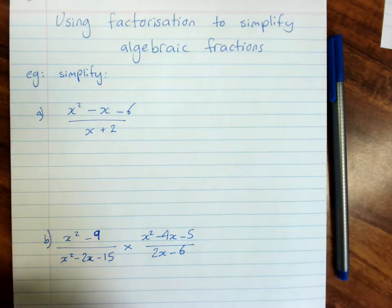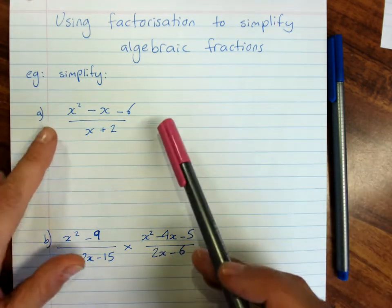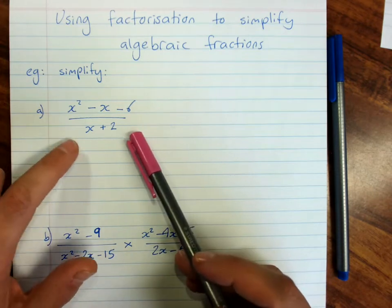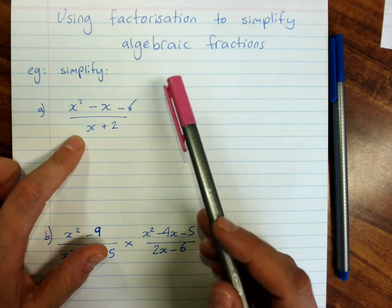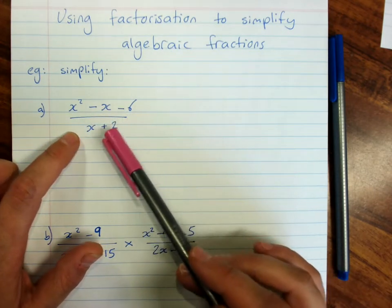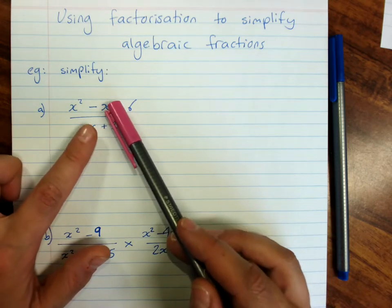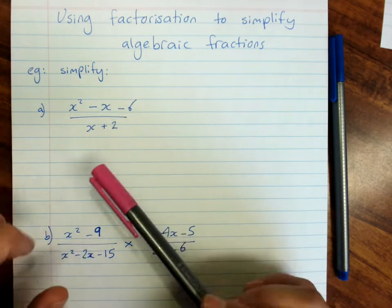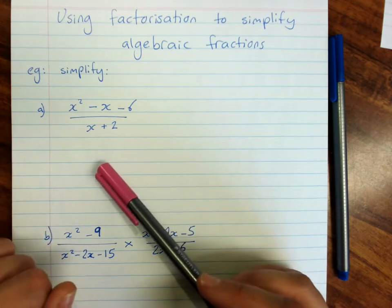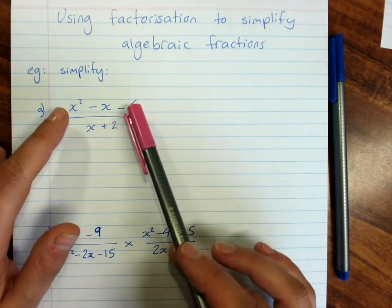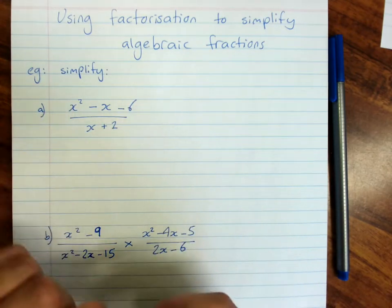Using factorization to simplify algebraic fractions. Here I've got an algebraic fraction and there is no common factor that I'm allowed to cancel. You can't cancel the x's because they are not factors of either expression. However this expression can be factorized.